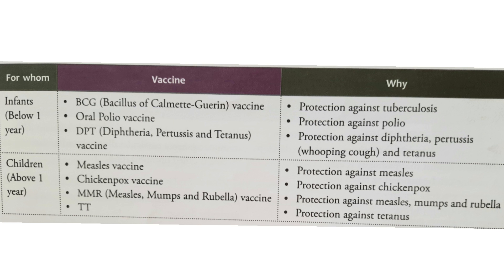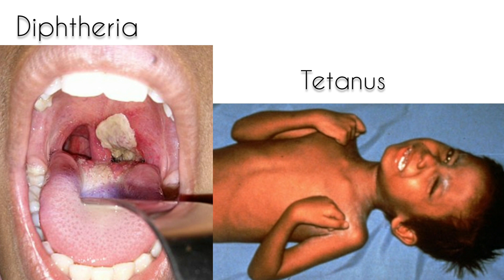Some important vaccines for infants and children are the BCG, the Oral Polio Vaccine, and the DPT. BCG gives protection against tuberculosis. The Oral Polio Vaccine protects against polio. The DPT — Diphtheria, Pertussis, and Tetanus — vaccine gives protection against diphtheria, pertussis (whooping cough), and tetanus. Diphtheria is a serious infection of the nose and throat. Tetanus is a bacterial disease which causes spasms and eventually leads to death.